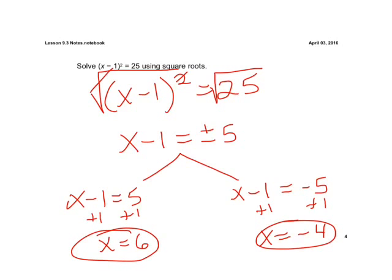So when we have a quantity squared, we don't need to panic. We can just square root both sides. The square root cancels out our squared. And then we know we have two answers on our right side. So split it into two and we'll get our two solutions there.